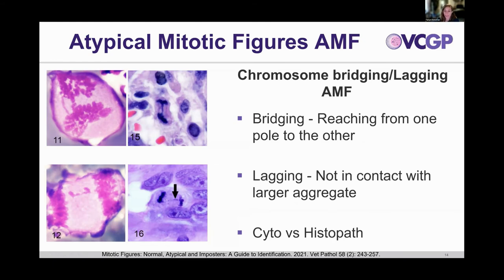The next broad category of atypical mitotic figures is segregation errors, comprising chromosome bridging and chromosome lagging. Chromosome bridging is when chromosomes stretch from one pole to the other. Chromosome lagging is when chromosomes are not in contact with the larger aggregates and were left behind during anaphase or telophase. These structures are probably easier to visualize on cytology. We have to be careful about not being too specific when interpreting atypical figures on histopathology, as it might be harder to be definitive at our usual magnification of 400x.